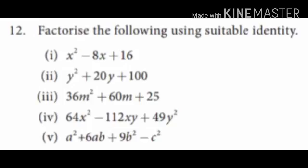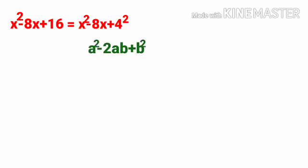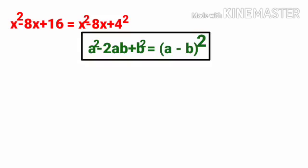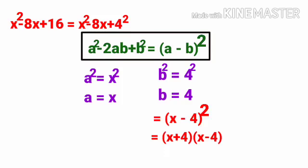12th sum: Factorize the following using a suitable identity. Subdivision 1: x squared minus 8x plus 16. The last term 16 is 4 squared. So a equals x and b equals 4. Applying the formula, x minus 4 whole squared. So the answer is x minus 4 into x minus 4.